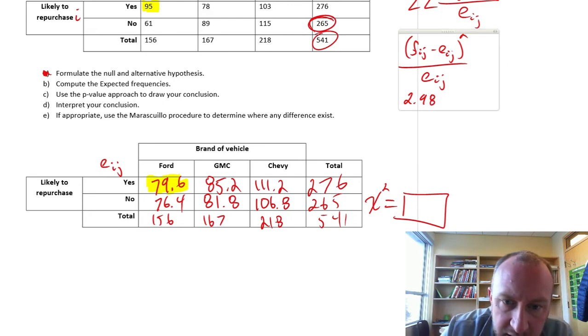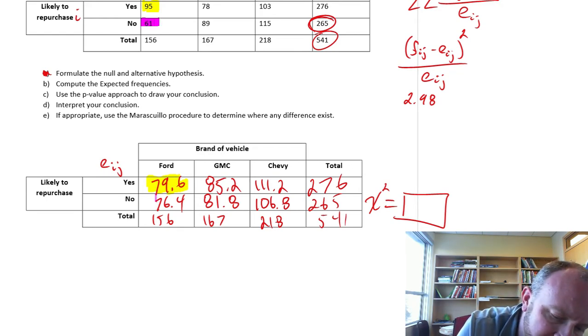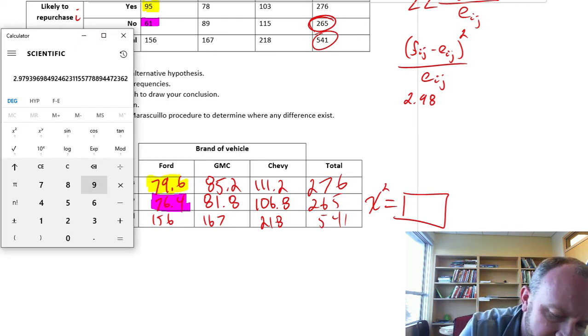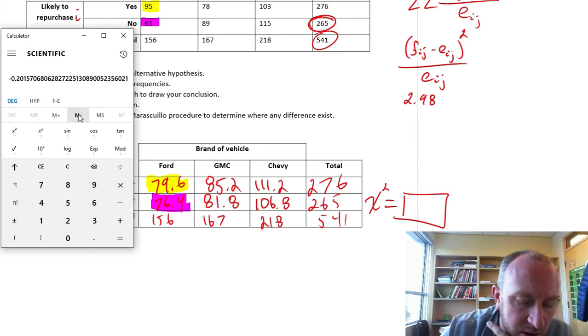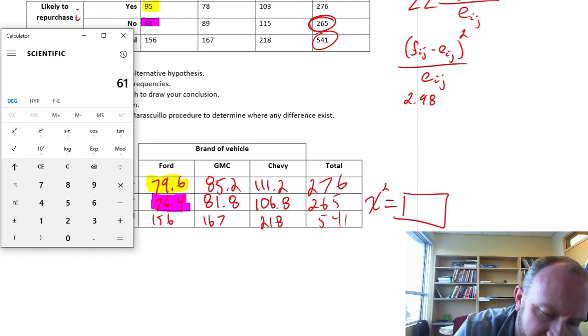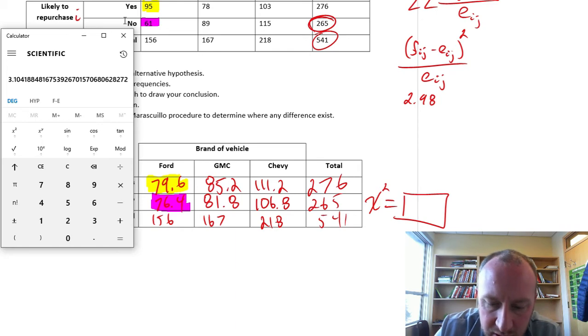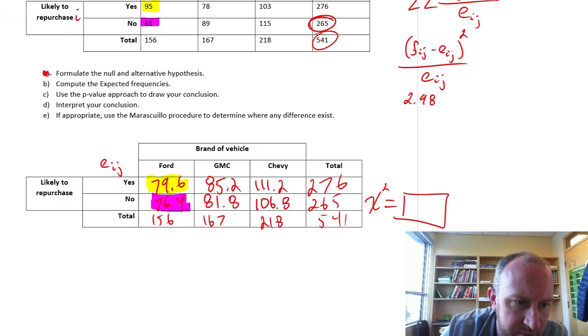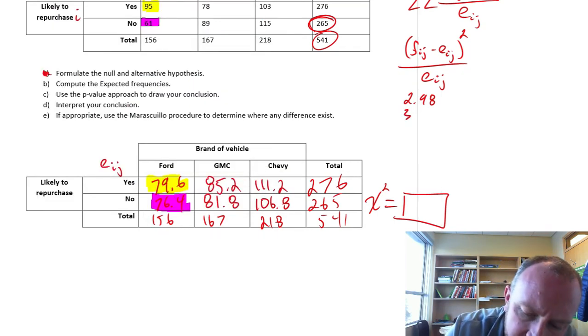And then the next one, we'll do the Ford no, so 61 and 76.4. 61 minus 76.4, squared, divided by the expected 76.4. I think I forgot to square it, didn't I? 61 minus 76.4 squared divided by 76.4. There we go, 3.1, that's a little better.